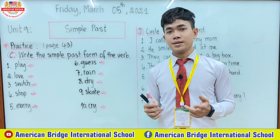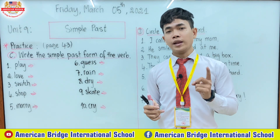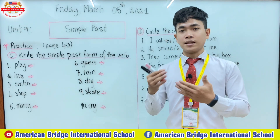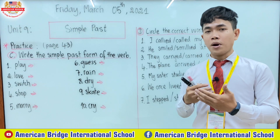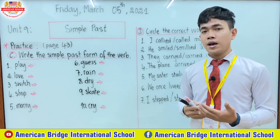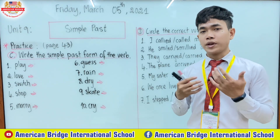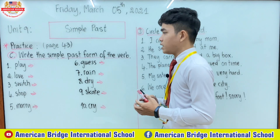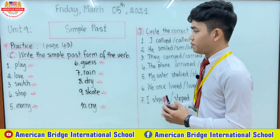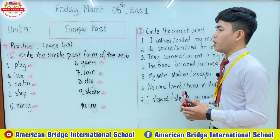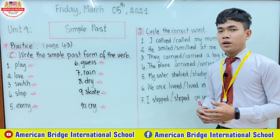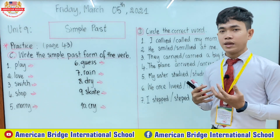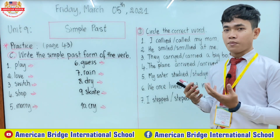So there are two parts. First part is about Part C and the second one is about Part D. So we're going to start with Part C: write the simple past form of the verb. There are 10 verbs that we have to change into the simple past.